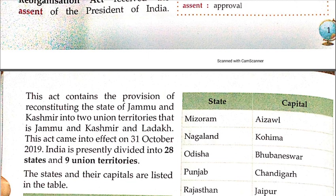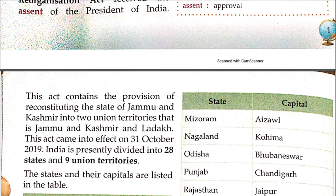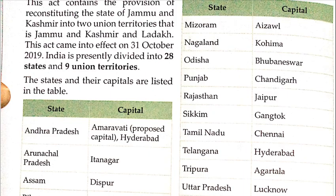This Act came into effect on 31st October 2019, and now Jammu and Kashmir has been divided into Union Territories. The states and their capital list is shown in the table.